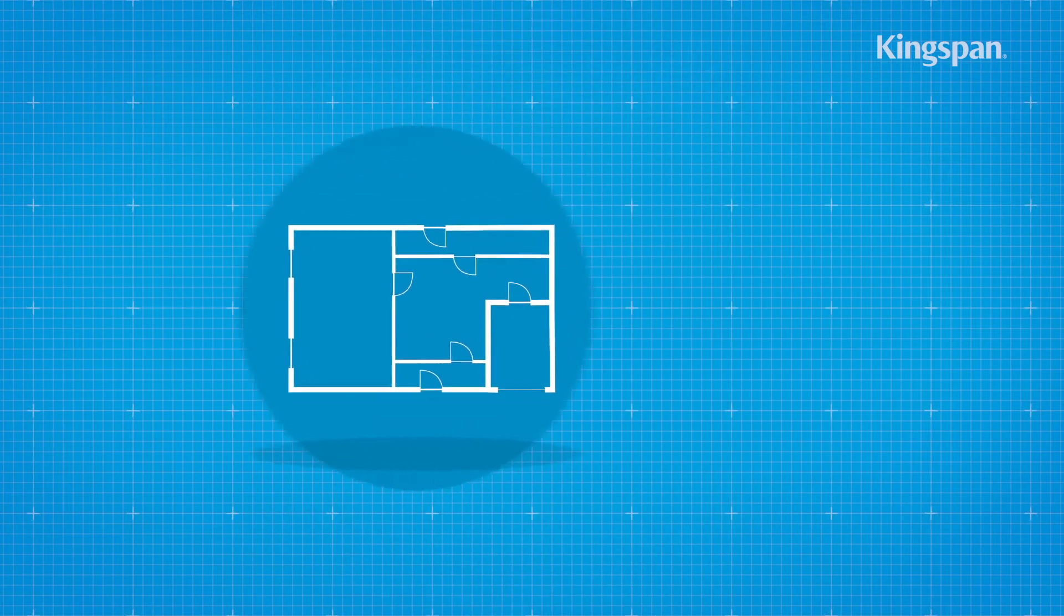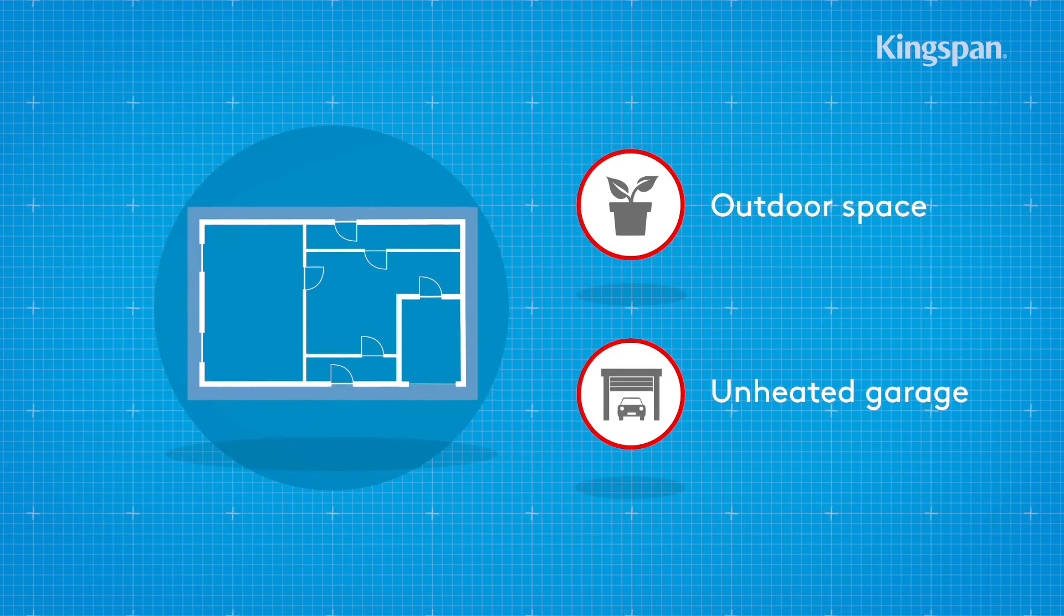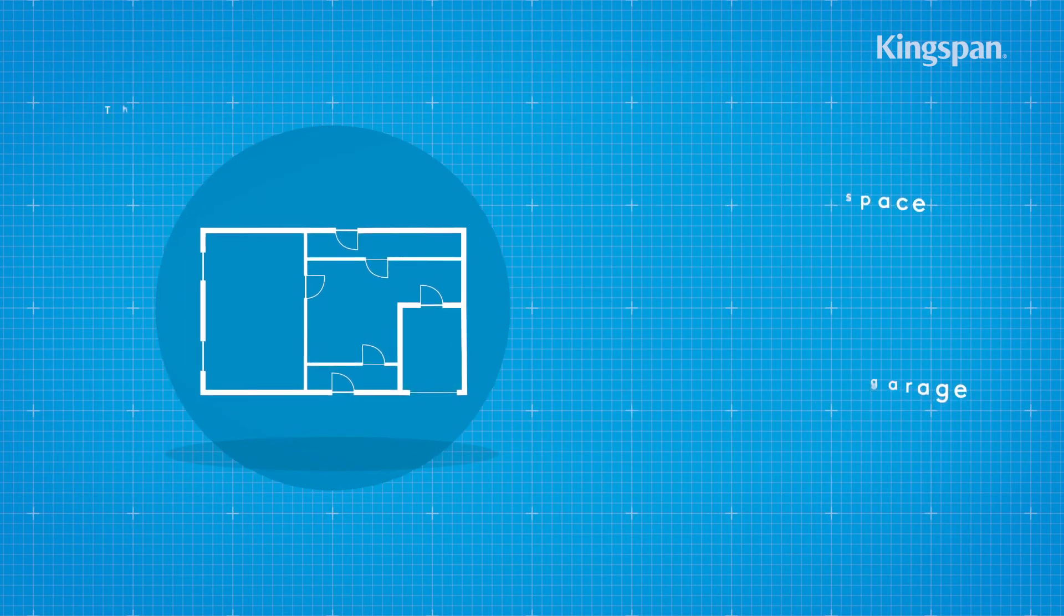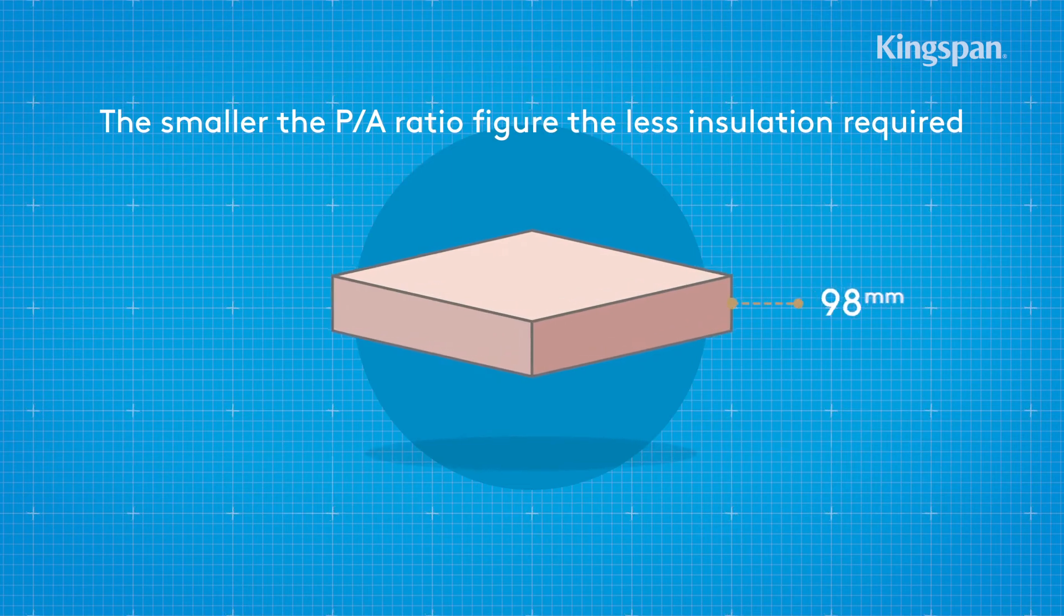An exposed floor perimeter refers to walls that connect to an unheated space, for example, an outdoor space or an unheated garage.